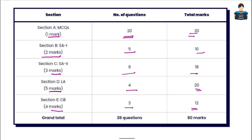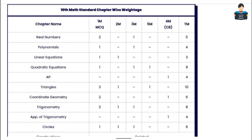So total 80 marks. In the 80 marks, chapter-wise you can see how it is split. Now we will see the standard sample paper based chapter-wise weightage.